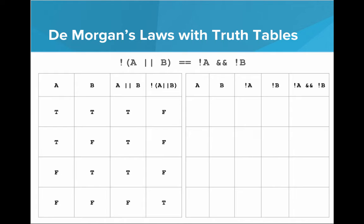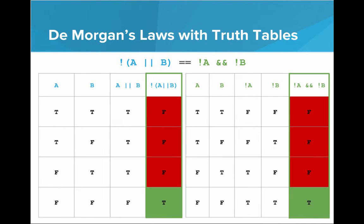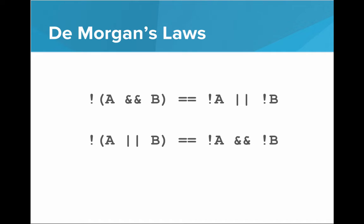Now let's build the truth table for the right side. Combinations: true/true, true/false, false/true, false/false. NOT A is false, false, true, true. NOT B is false, true, false, true. AND is only true when both inputs are true, so the first three rows are false and the last is true: false, false, false, true. Looking at the last columns — these are exactly the same. No matter what the inputs for A and B are, both sides have the same result. Therefore, these statements are equivalent. And those are DeMorgan's Laws — they tell us how we can negate ANDs and ORs, and this can help you simplify your Boolean expressions.